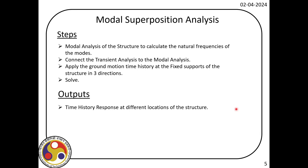For modal superposition analysis we must first do a modal analysis, which we already completed in the previous lecture. We will take that model and perform the transient analysis by applying the El Centro recorded ground motion at the fixed support along three directions, because when an earthquake occurs the ground experiences shaking in all three directions. Once we solve using modal superposition, we will select nodes at the top floor level and plot the time history response along different directions.